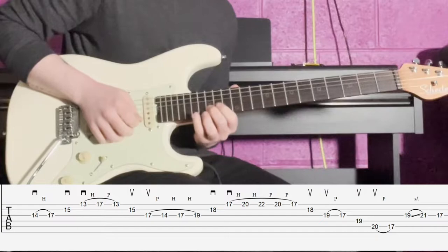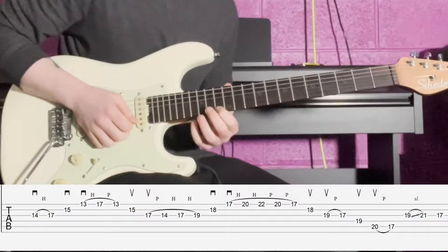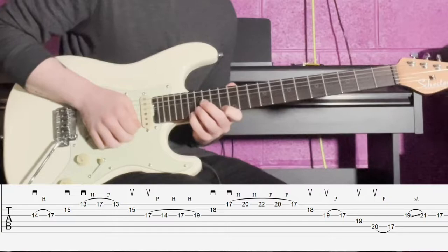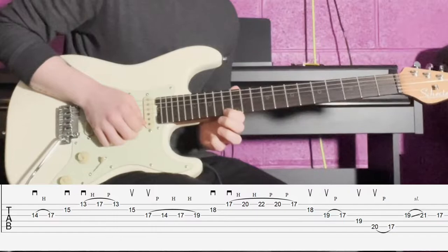Then we're going to hit the minor third, which is fret number 13 on the high E string, with a down pick. So you have down, hammer, down. Then we're going to hammer on to the perfect fifth, and then we're going to pull off to your minor third.